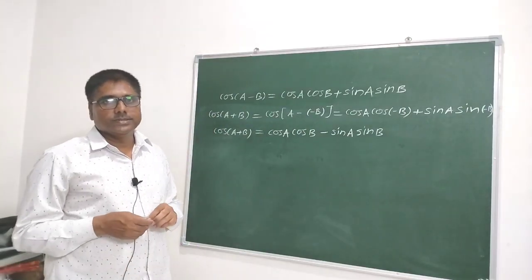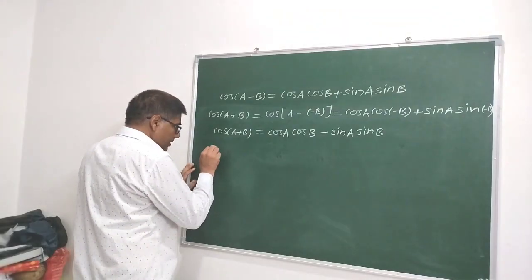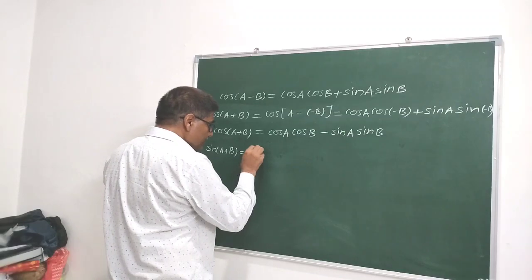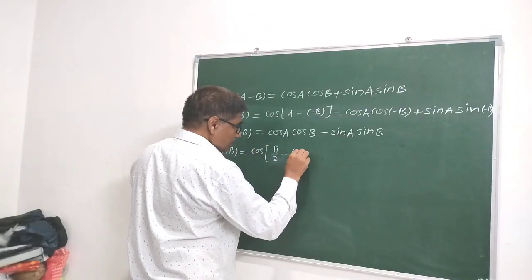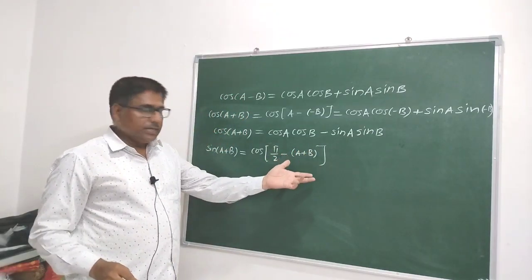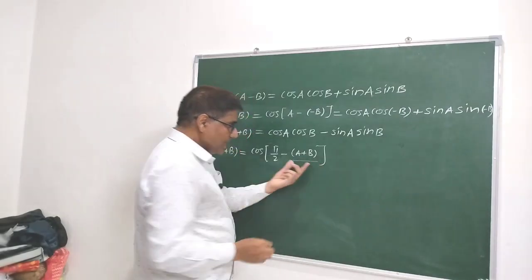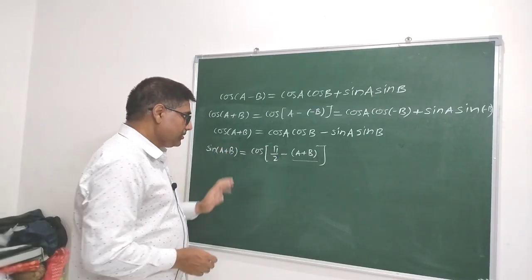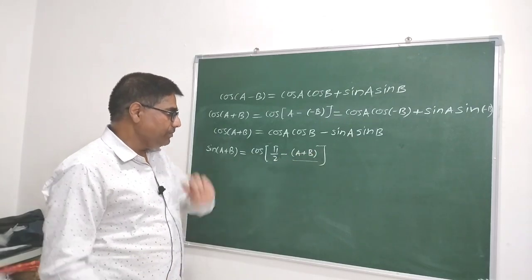Now let us derive the formula for sin(A+B). sin(A+B) can be written as cos(π/2 - (A+B)), because cos(90° - θ) = sin θ. Let us consider the entire bracket as θ: cos(90° - θ) gives sin θ. Therefore, we can write sin(A+B) = cos(90° - (A+B)).